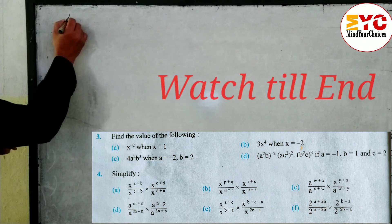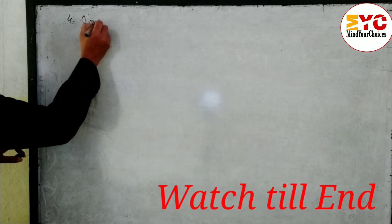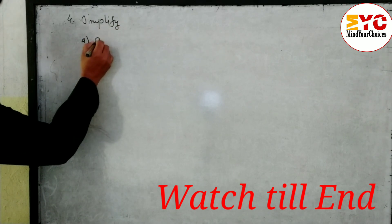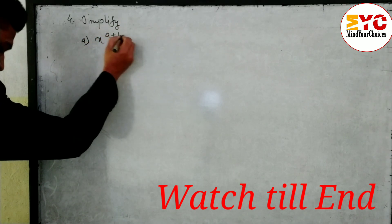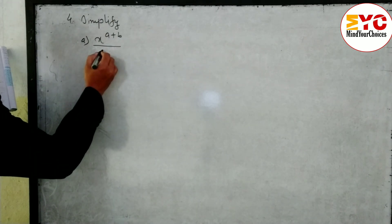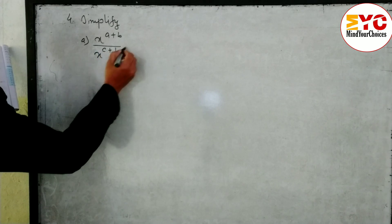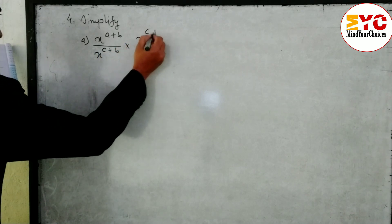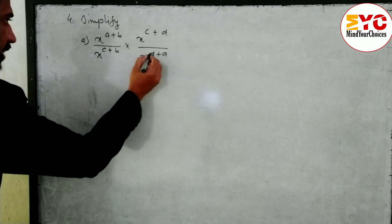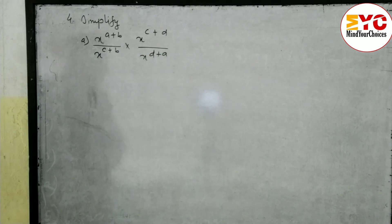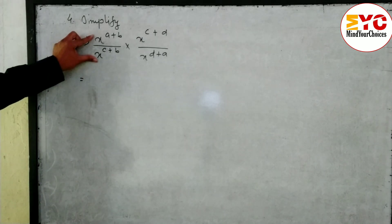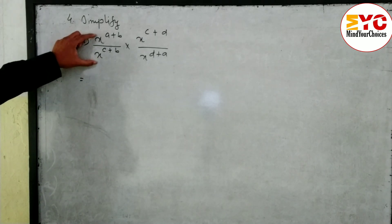Question number 4 — we have to simplify. Part (a): x power (a+b) divided by x power (c+b), into x power (c+d) divided by x power (d+a). Now look at here — the base is the same, and in division with the same base, we have to subtract the power.